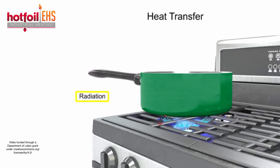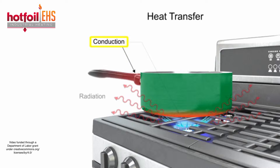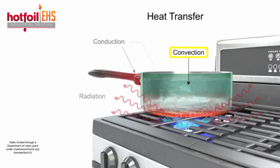Heat from the flame radiates in all directions. Conduction takes place with the transfer of heat from the burner to the metal pan, and this heat transfer is also responsible for making the handle hot after a period of time. The water is heated by the process of convection, which is a circular movement caused by heated water rising and cooled water falling.